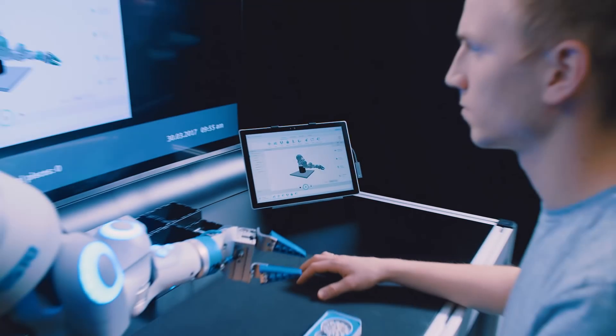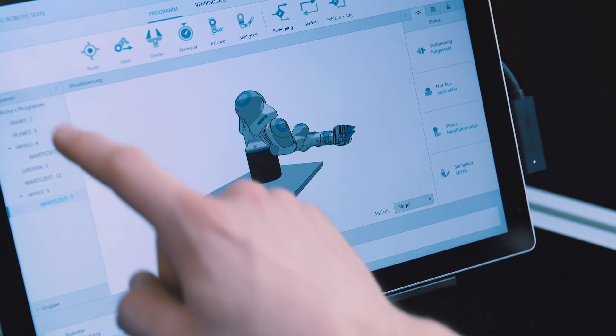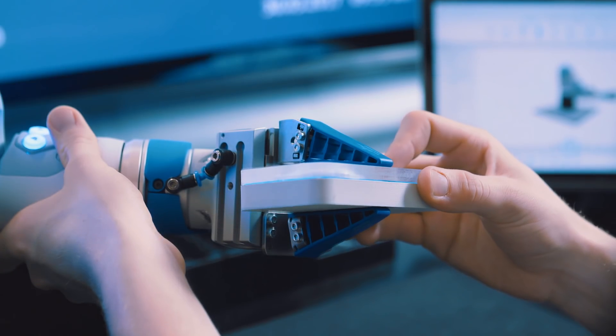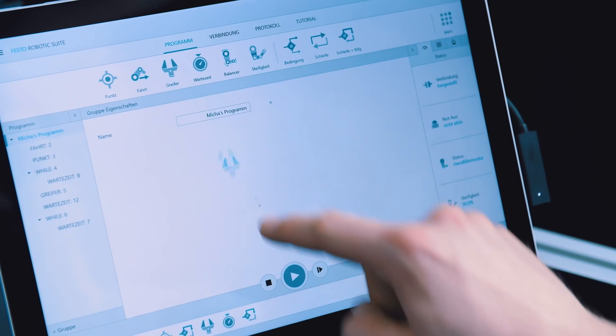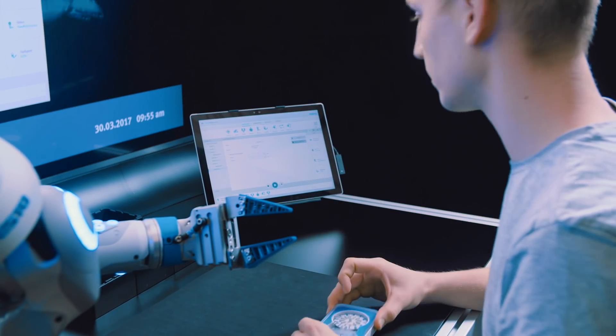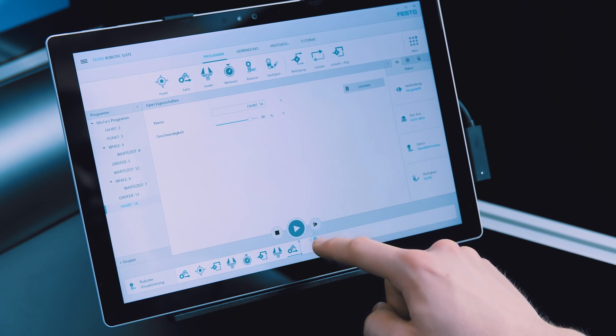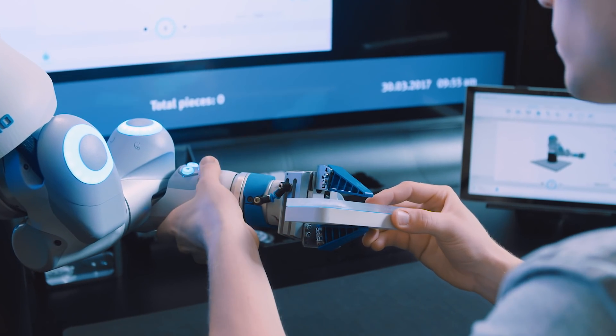Naturally, it was important to us that the robot is as simple and intuitive as possible to operate. This means that in the human-machine collaboration, the worker should also be able to program or modify a sequence themselves. That's why this user interface, the interface between the robot and human, is a very important part of our development work.